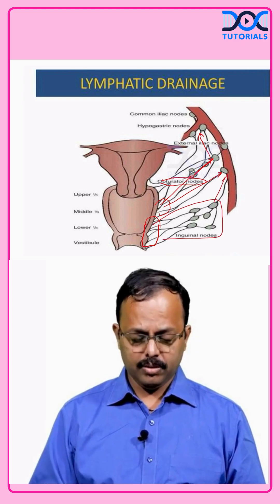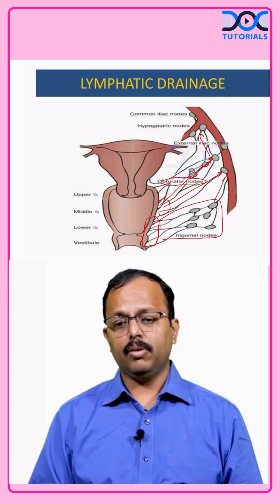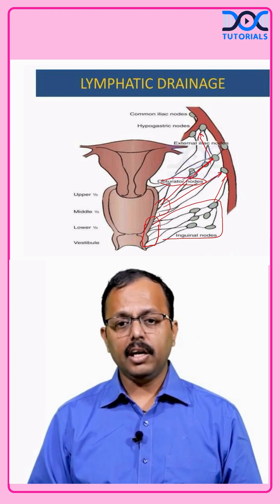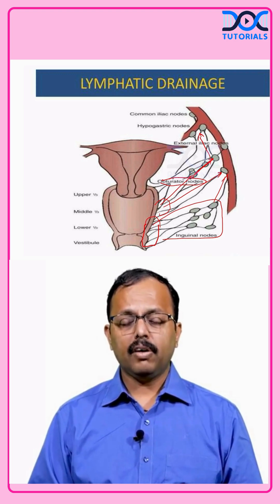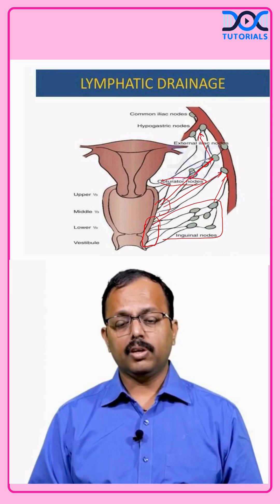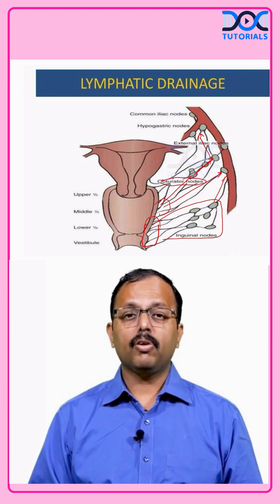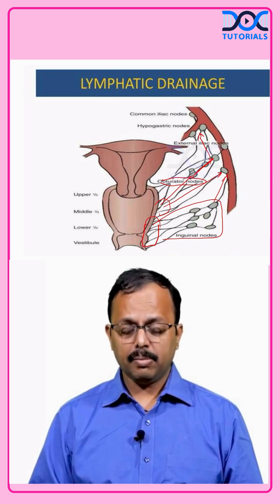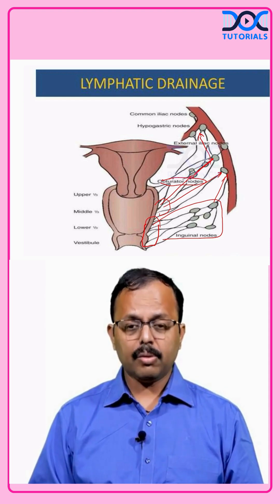The lower third can drain to the inguinal nodes and from there to the iliac nodes. This is clinically important: if you have an unknown primary in the inguinal node, always keep in mind that you could be dealing with a primary from the vagina. This becomes very important when you have an unusual tumor like a squamous cell cancer deposited in the inguinal node or a malignant lesion not involving other areas but involving the inguinal nodes, later progressing to the iliac nodes.